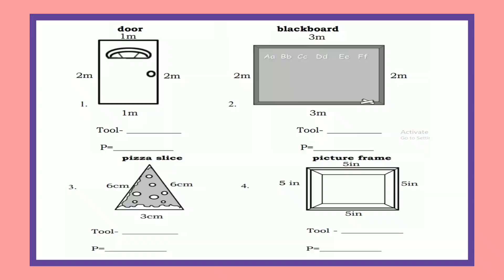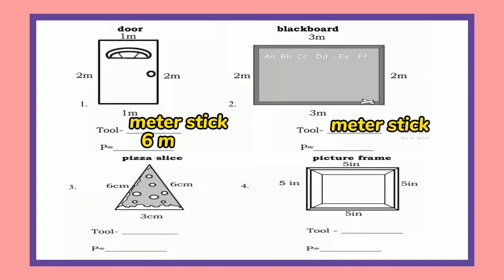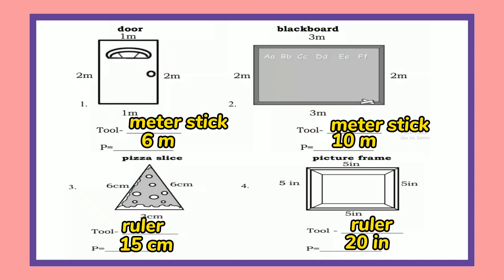It's time to test yourself. Give the appropriate tool in measuring the perimeter of the following. Number one: the tool to measure the door is a meter stick, and the perimeter is 6 meters. Number two: the tool to measure the blackboard is a meter stick, and the perimeter is 10 meters. Number three: the tool to measure the picture frame is a ruler, and the perimeter is 15 centimeters. Number four: the tool to measure it is a ruler, and the perimeter is 20 inches.